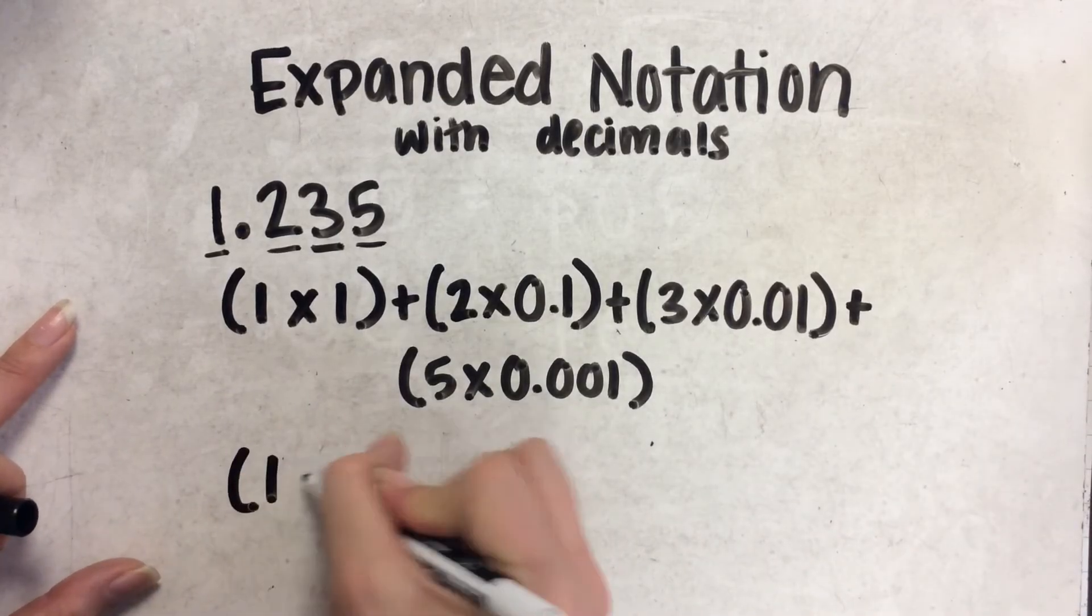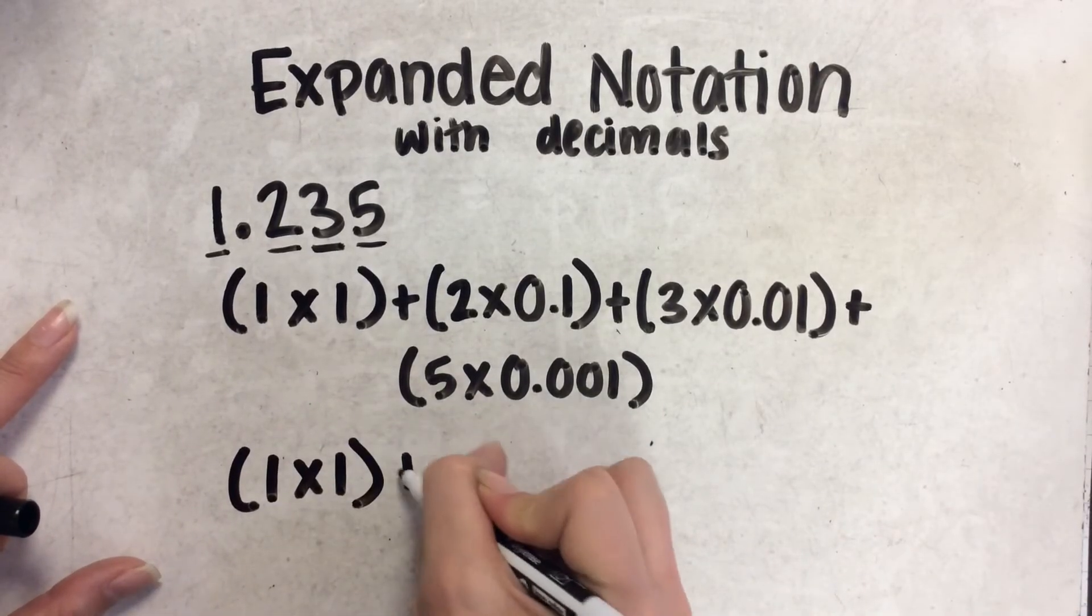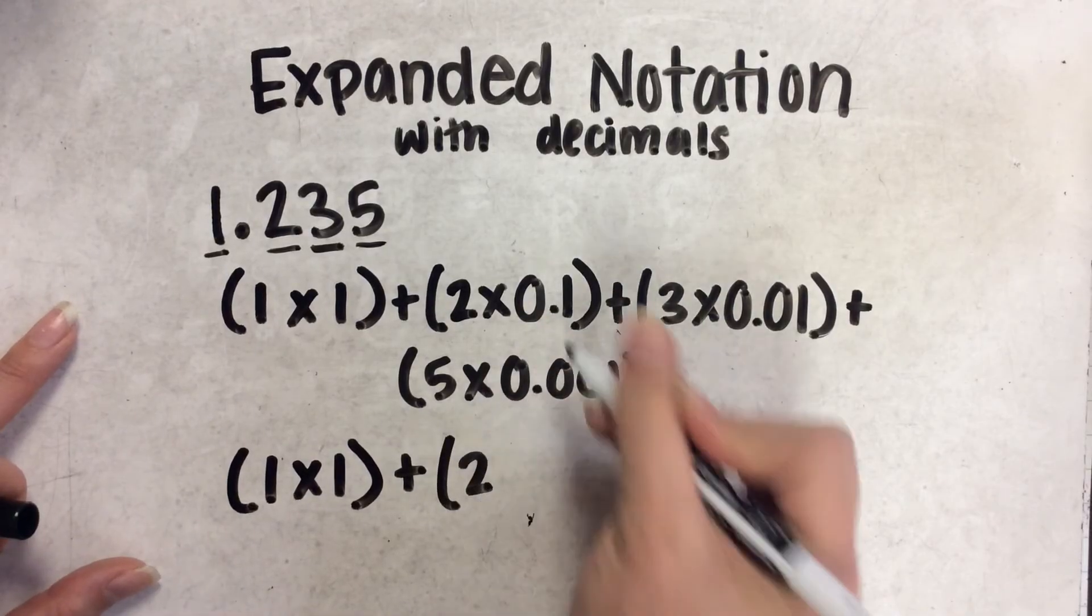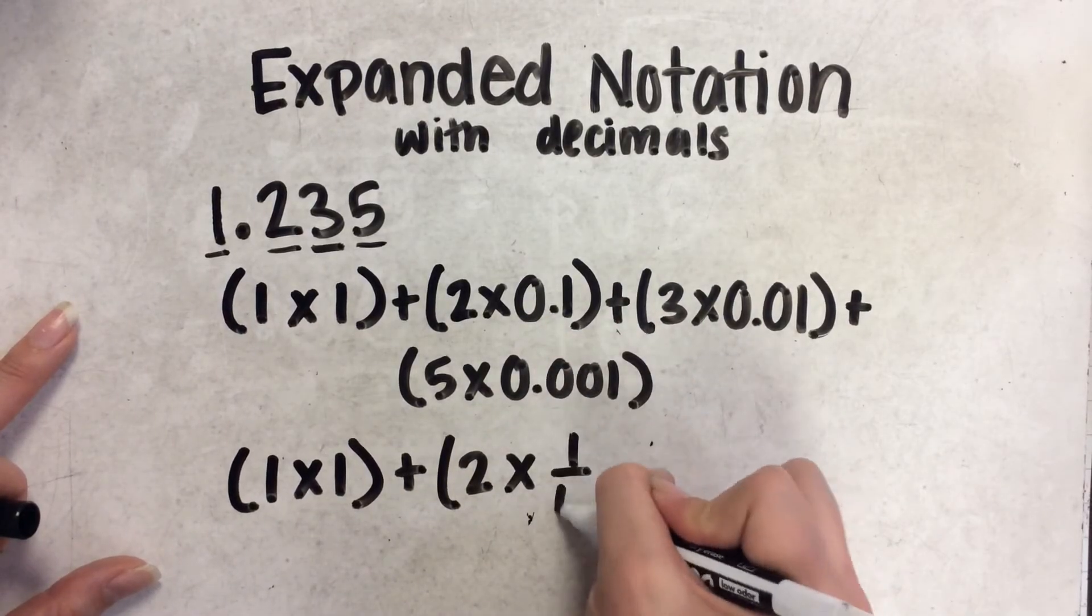So, it would still be 1 times 1, but then when we do 2 times 1 tenth, we can write it as a fraction.